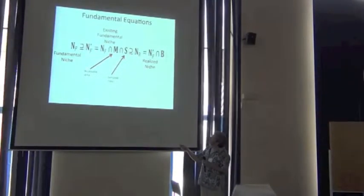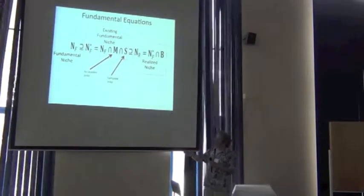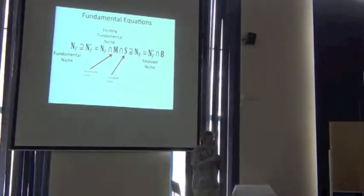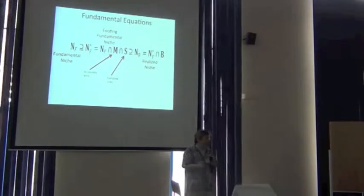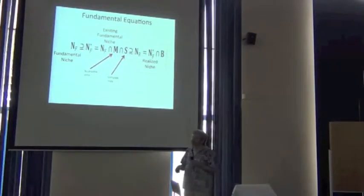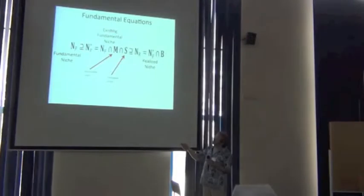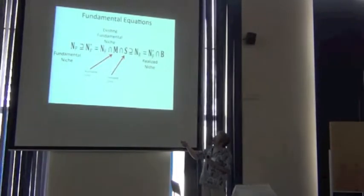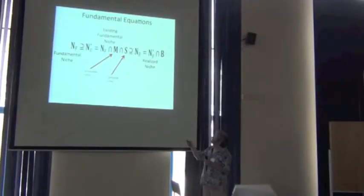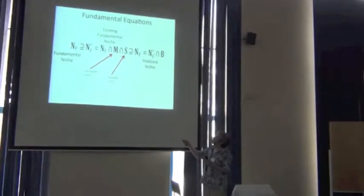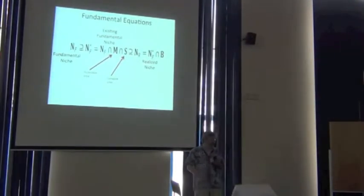So really, what we can observe is this. This is what we call the existing fundamental niche. It's the part, the set of conditions within the fundamental niche that are manifested within M, within the area sampled, such that we can actually observe it. And so the existing fundamental niche is the fundamental niche reduced by, I've simplified the notation slightly here, but reduced by the environments manifested within M, and the environments that were sampling.